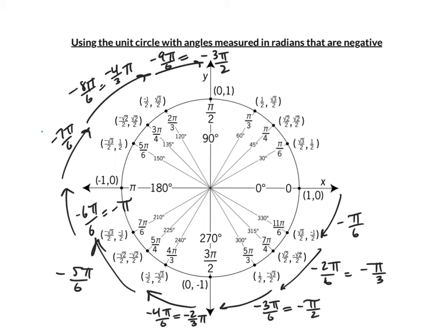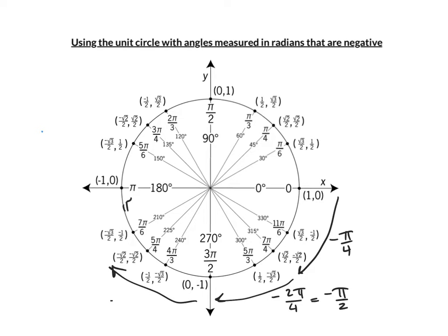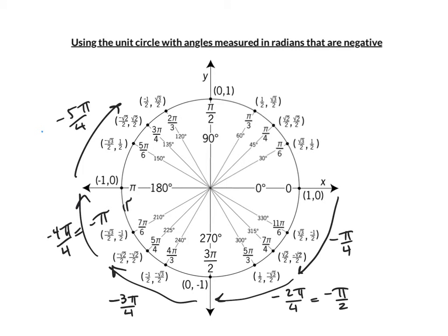You can look at the unit circle and see the positive angles and kind of figure it out going the other direction with the negative angles. But understanding this is very helpful. If I count by pi over 4's in the negative direction, that would be negative pi over 4. And another 45 degrees is negative 2 pi over 4, or negative pi over 2. And another 45 degrees is negative 3 pi over 4. And another 45 degrees is negative 4 pi over 4, which is negative pi. There's negative 5 pi over 4, negative 6 pi over 4, which is negative 3 halves pi.